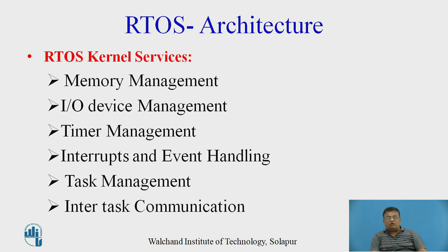The major services offered by the RTOS kernel are: memory management, IO device management, timer management — meaning the kernel provides CPU time to different programs and processes — interrupts and event handling. Interrupts mean whenever any device requires some sort of service from the processor, that device can get the required service by interrupting the processor. Then task management, and mainly the communication between different tasks.